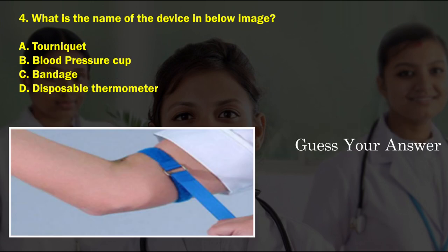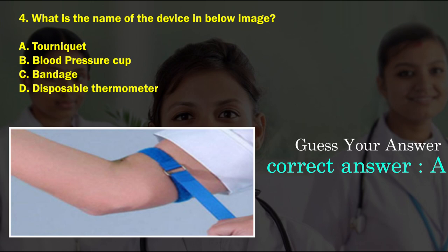What is the name of the device in the below image? Option A: tourniquet, option B: blood pressure cuff, option C: bandage, option D: disposable thermometer. The correct answer is option A, tourniquet.